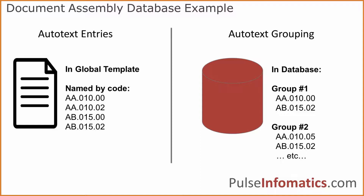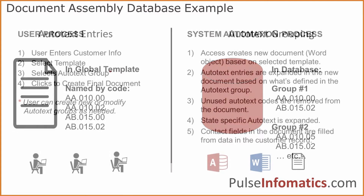In the database, I group those together. The grouping specifies which auto text entries we're going to use to populate a given document, because we can use any variation of them. I might create a group with two auto text entries, or another group with four, five, ten, or however many they want to include — those are used to create the final document.